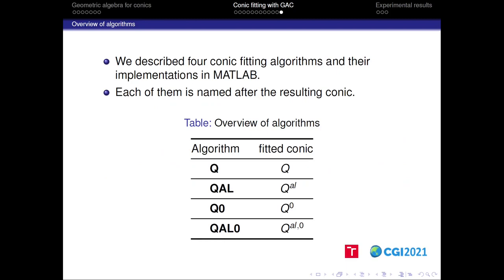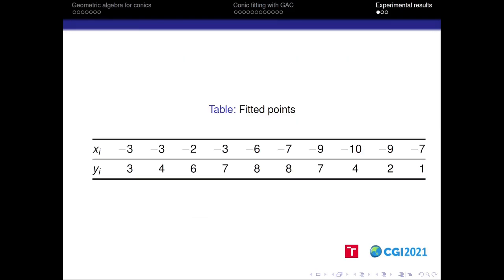We can see that the formulae for computation P con star and W star are identical to the proposition 1, up to the point that here the matrices involved are denoted with asterisk. This means that the starred matrices and vectors involved must be substituted according to this substitution table, which depends on the conic we want to fit. Overall, we described four different conic fitting algorithms, including the original one and their respective implementations in MATLAB. For the sake of the simple orientation, we named each of these algorithms after the conic it produces.